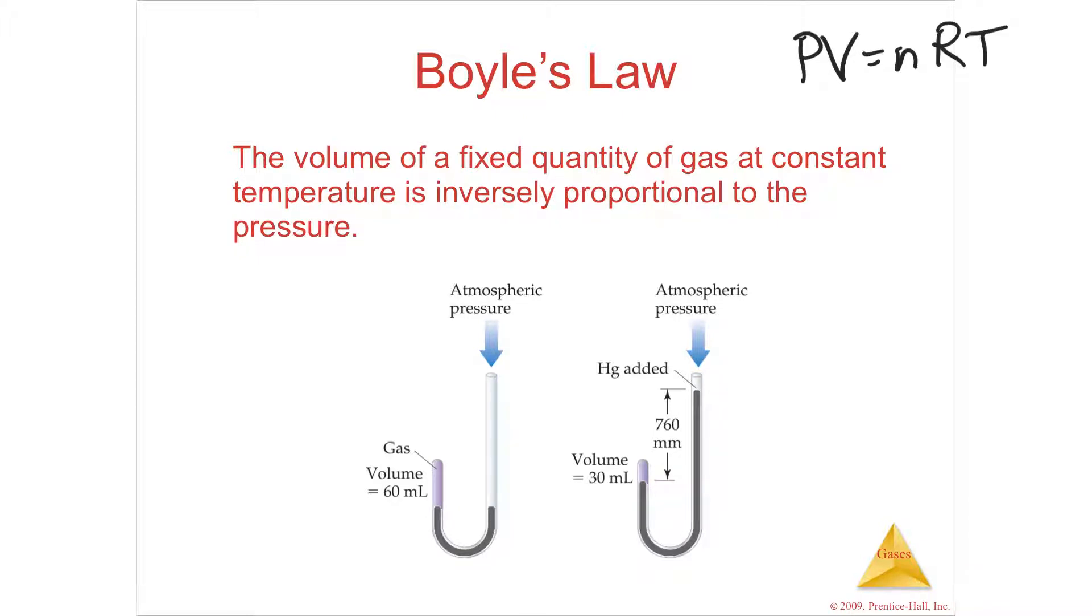So pressure and volume on the same side of the equal sign is going to be inverse. That means as one of them goes up, say if pressure goes up, the volume goes down. So imagine that you've got a stress doll, and you squeeze that stress doll, and you reduce its volume. The pressure goes up, and the eyes pop out. So the volume and the pressure are inversely related.